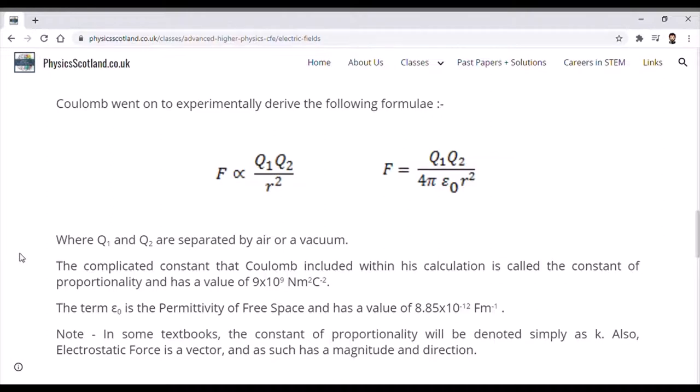In this case, the term epsilon naught simply refers to another constant and it's referred to as the permittivity of free space.